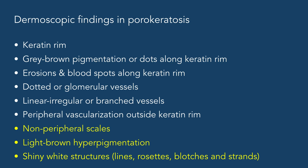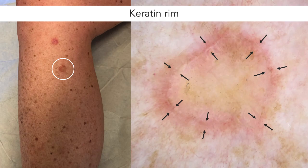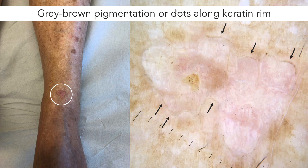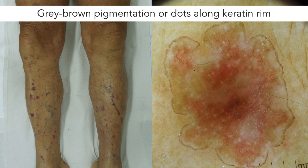Let's start by looking at dermoscopic features related to the keratin rim. Here is a typical case of porokeratosis in which dermoscopy reveals the full keratin rim highlighted in between the black arrows. In some cases, the keratin rim can display areas with grey-brown pigmentation or grey-brown dots. In this case, the whole keratin rim is heavily pigmented. This is also a nice case to demonstrate the atrophy of the central area, making the linear irregular or branched vessels more visible, as well as the follicular openings seen as white dots or small white circles.